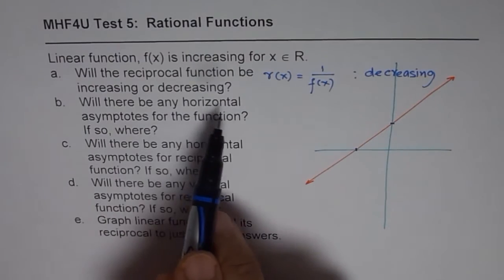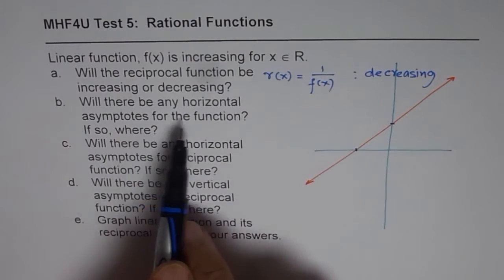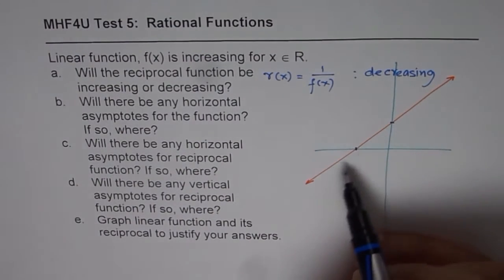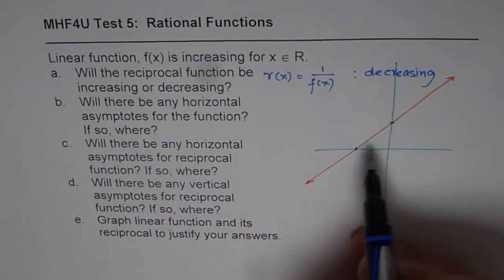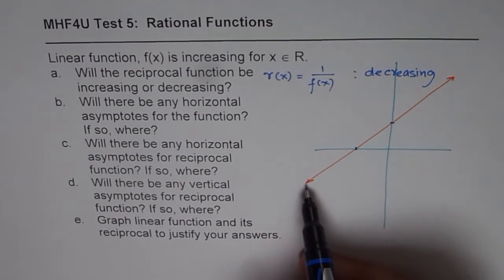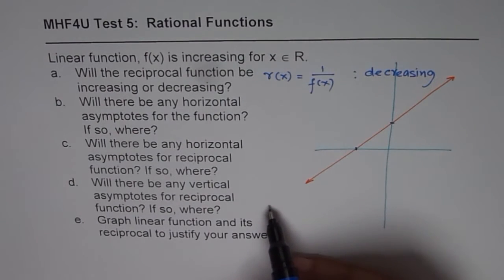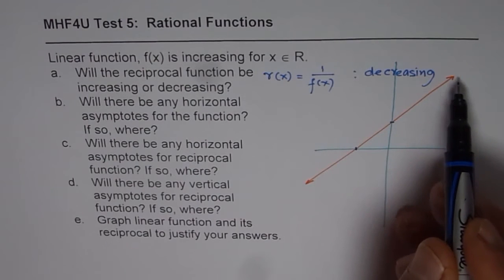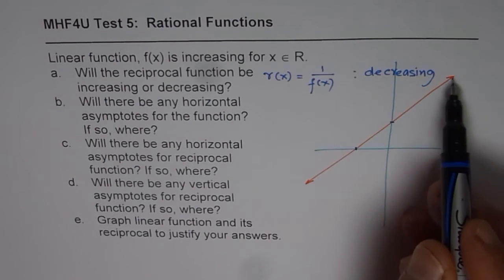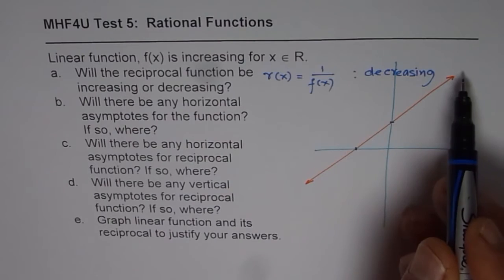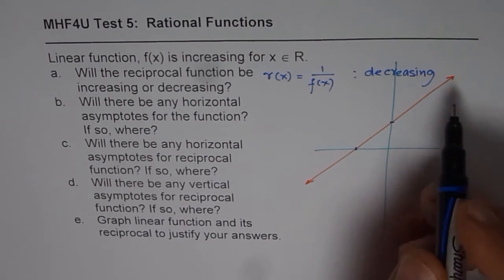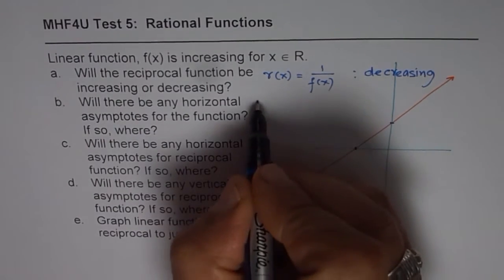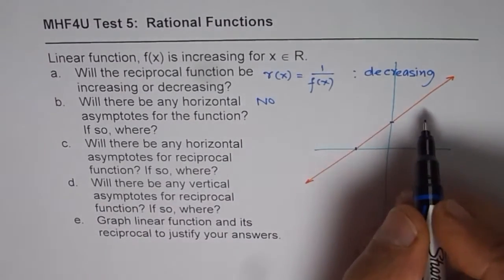Will there be any horizontal asymptote for the function? As far as the function is concerned, as x approaches negative infinity the function approaches negative infinity, and as x approaches positive infinity the function approaches positive infinity. So there is no asymptote for the linear function. The answer is no.